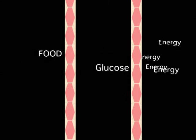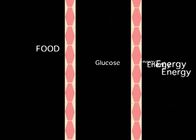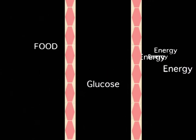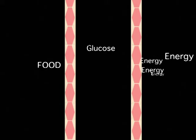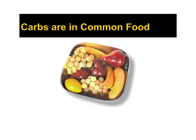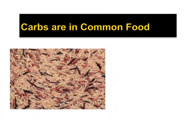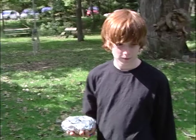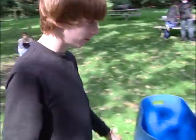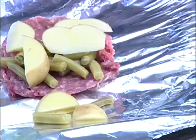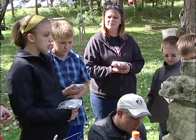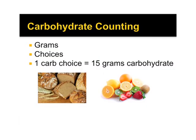The body breaks down carbohydrates from the food we eat and turns it into glucose or sugar for the body to use. Glucose can be used immediately for energy or stored in the liver and muscle for future use. Carbohydrates are present in common foods such as fruit, milk, bread, rice, pasta, and sweets. A common method for meal planning is counting carbohydrates or carbs, calculated in either grams or carb choices. One serving size equals 15 grams of carbohydrate or one carb choice.